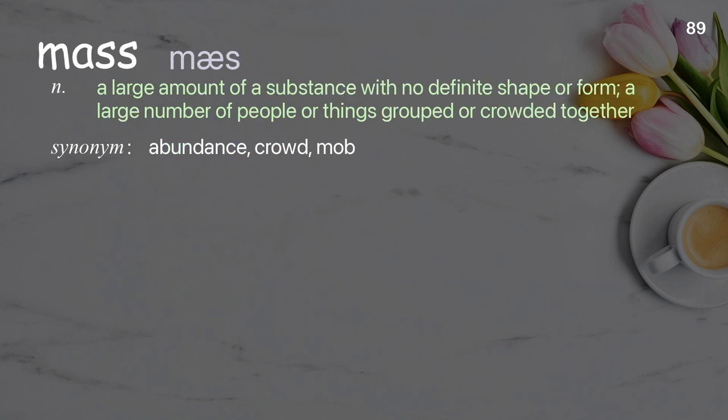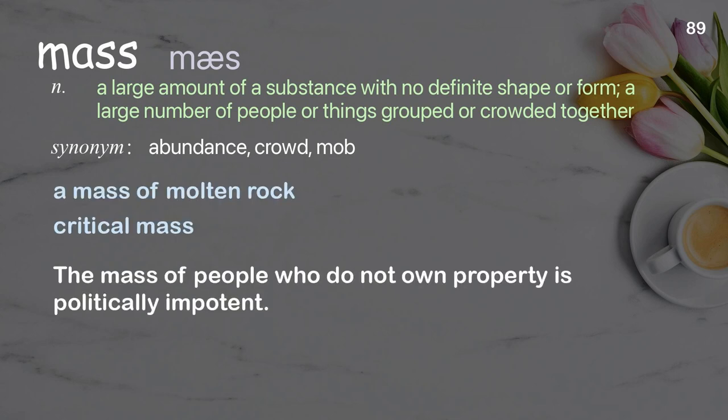Mass: a large amount of a substance, with no definite shape or form; a large number of people or things grouped or crowded together. Examples: A mass of molten rock. Critical mass. The mass of people who do not own property is politically impotent.